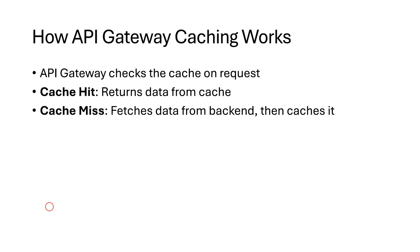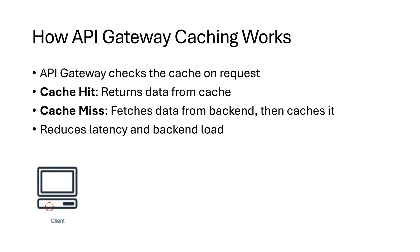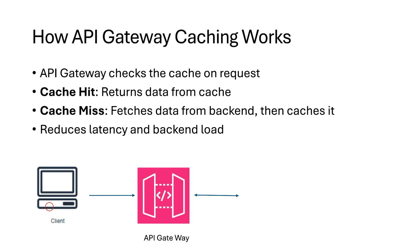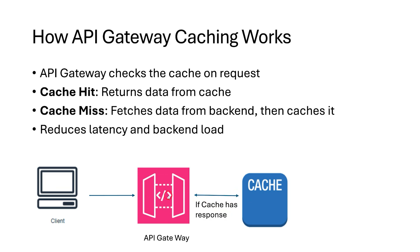The backend retrieves the data, stores it in the cache, and sends it to the client for future use. This setup significantly reduces latency and backend load. For better understanding, see this flow diagram. The client requests via API Gateway. If caching is enabled, it checks the cache first — if there's a response, API Gateway sends it directly back to the client.